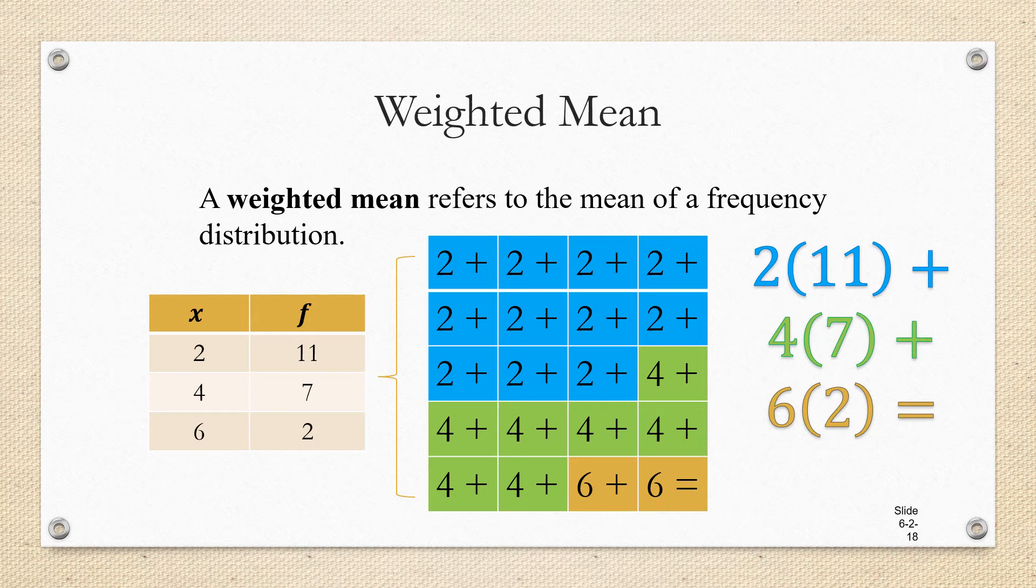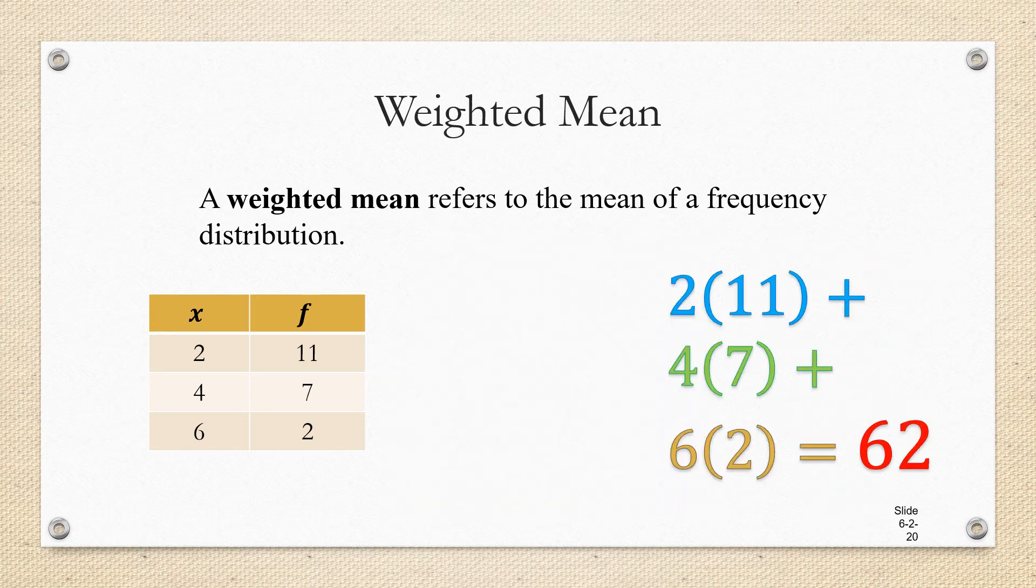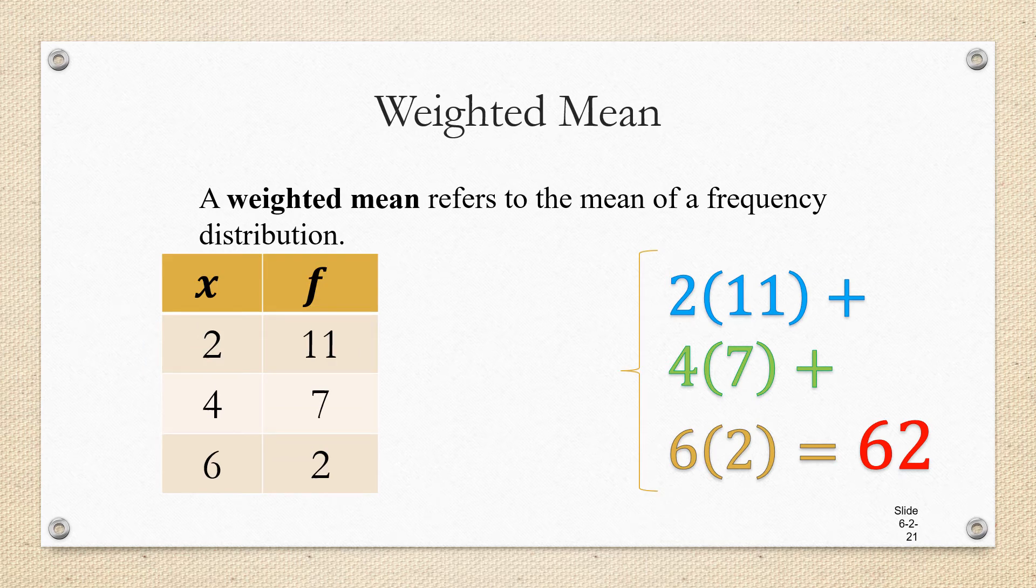So 22 plus 28 plus 12 is going to give us 62 for the total of our data values. And then all we have to do is to divide by the number of data values. But let's take a closer look before we do that. Do you notice something about the numbers that we multiply together? That's right, we multiplied each data value times its frequency.